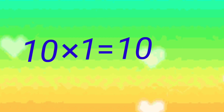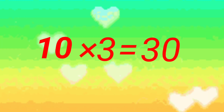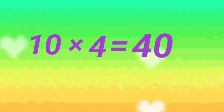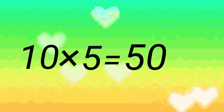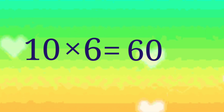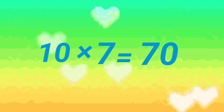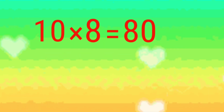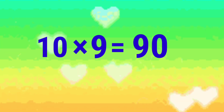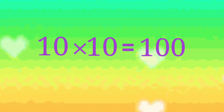10 on the 10. 10 twos are 20. 10 is a 30. 10 is a 40. 10 is a 50. 10 is a 60. 10 is a 70. 10 is a 80. 10 is a 90. 10 is a 100.